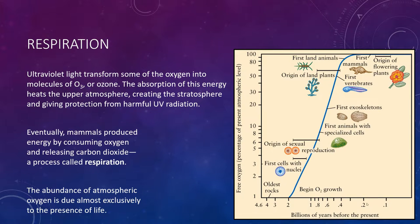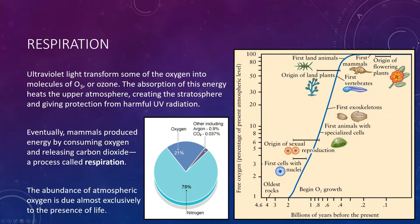We can see that O2 eventually starts to accumulate in the atmosphere and skyrockets when life comes about, then starts to settle when there's a balance. The current composition of the atmosphere is primarily nitrogen — left over from outgassing — making up 78%, oxygen at 21%, and then everything else, with argon and carbon dioxide making up the remaining approximately 1%.